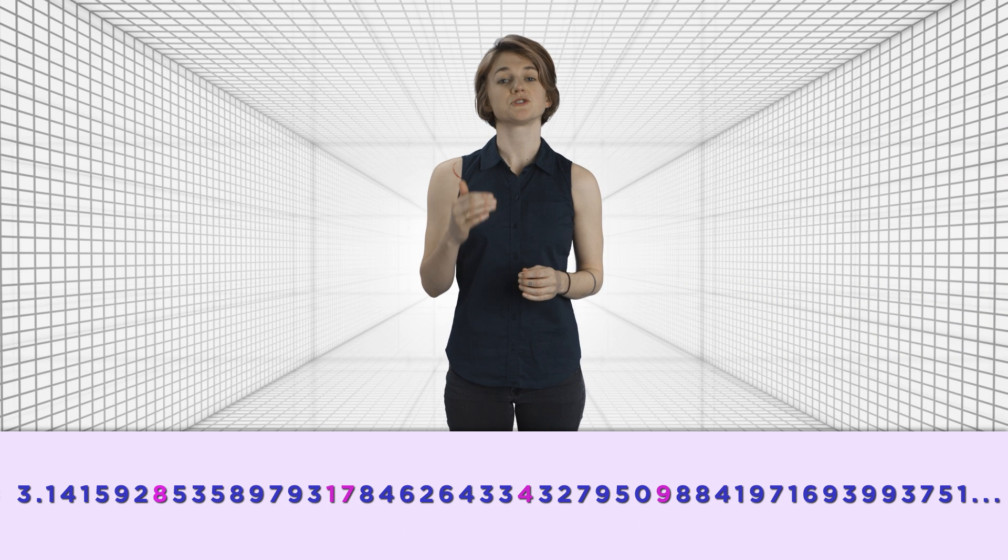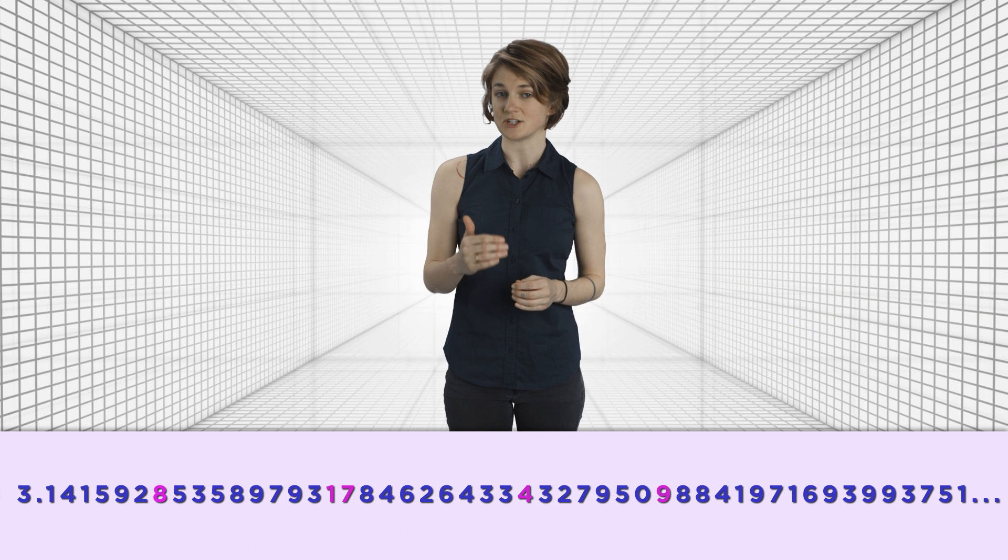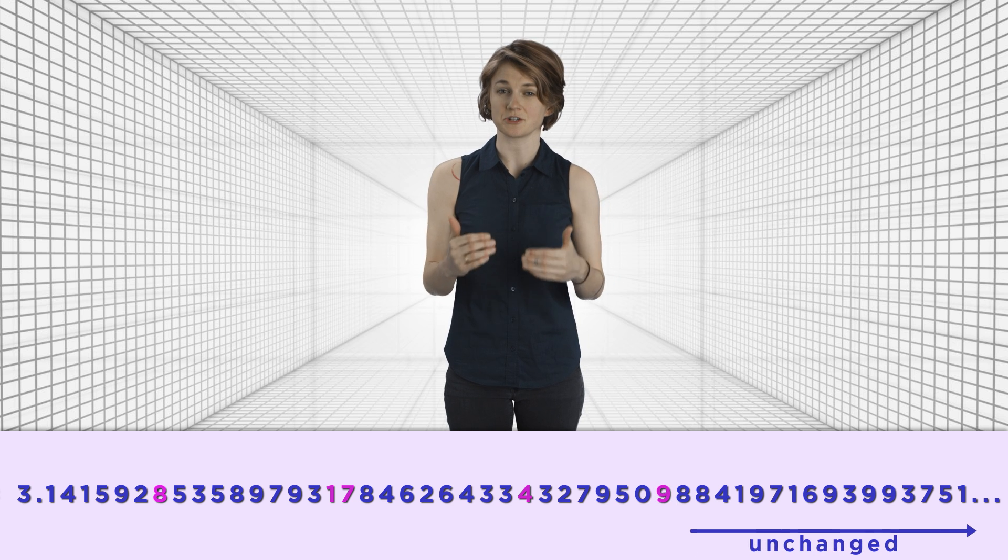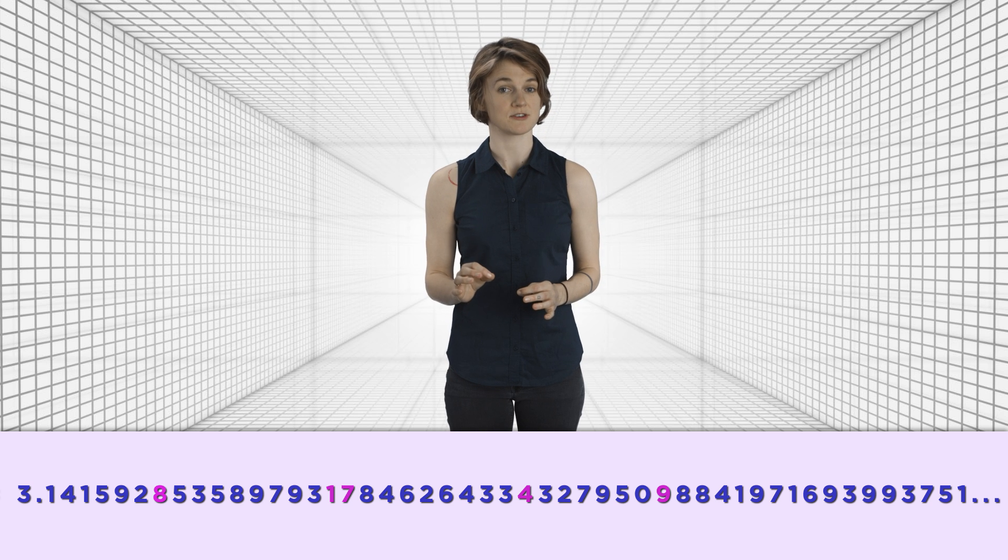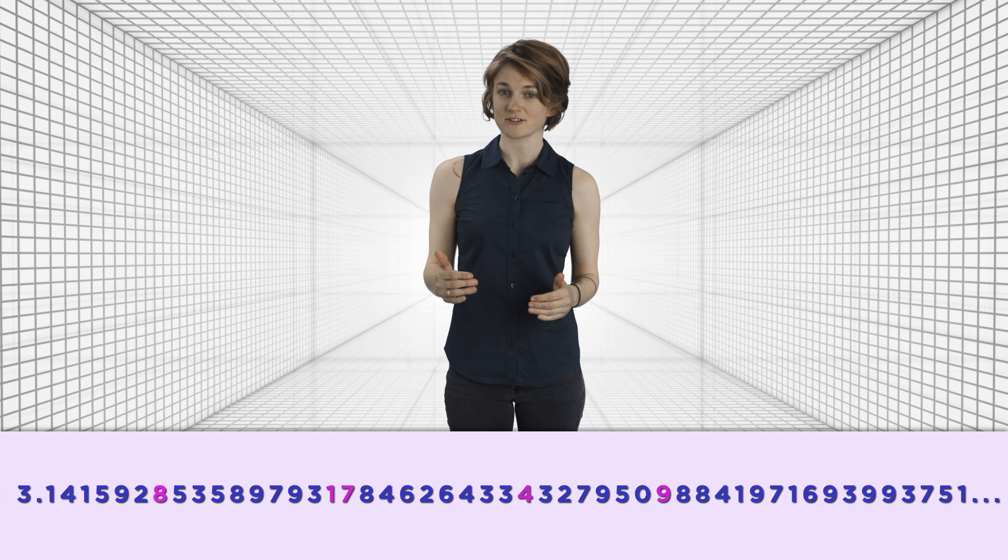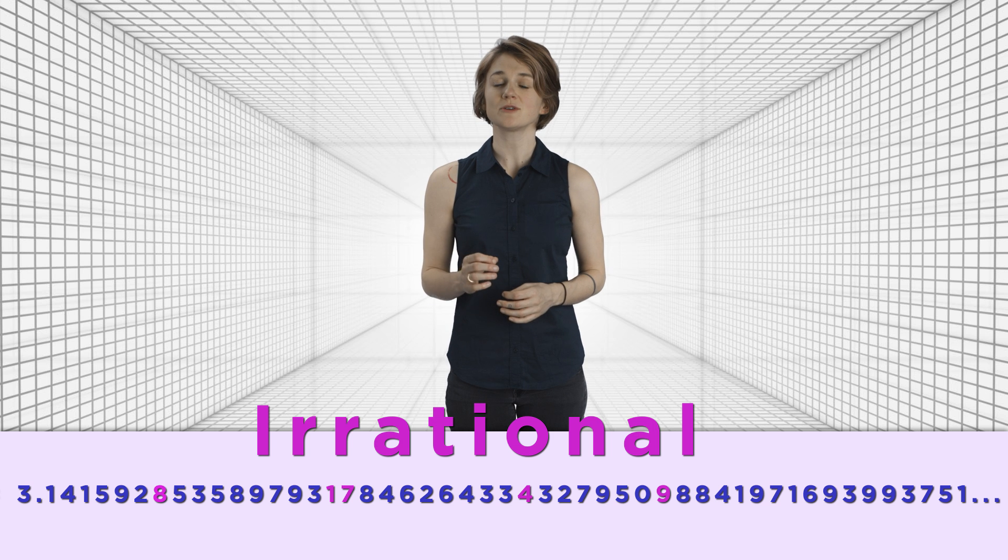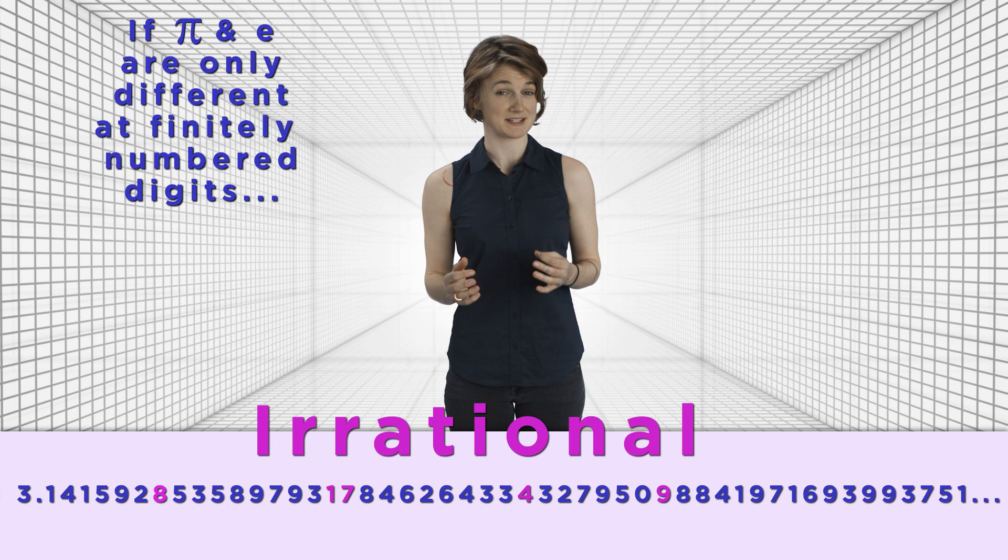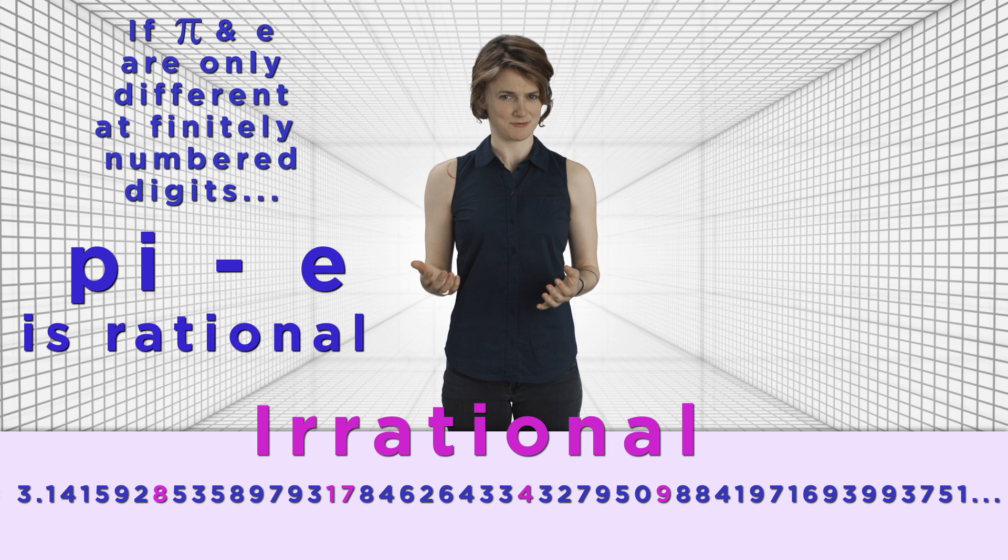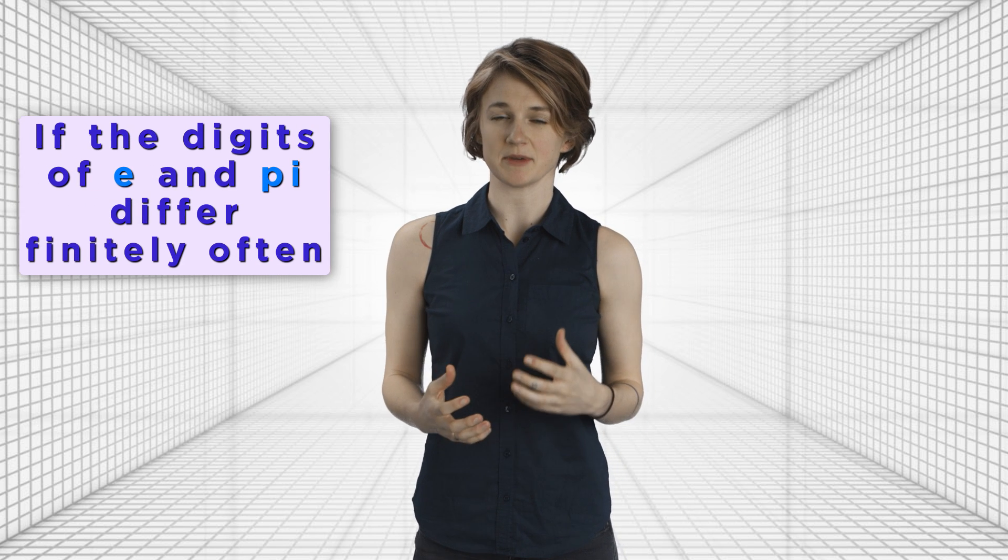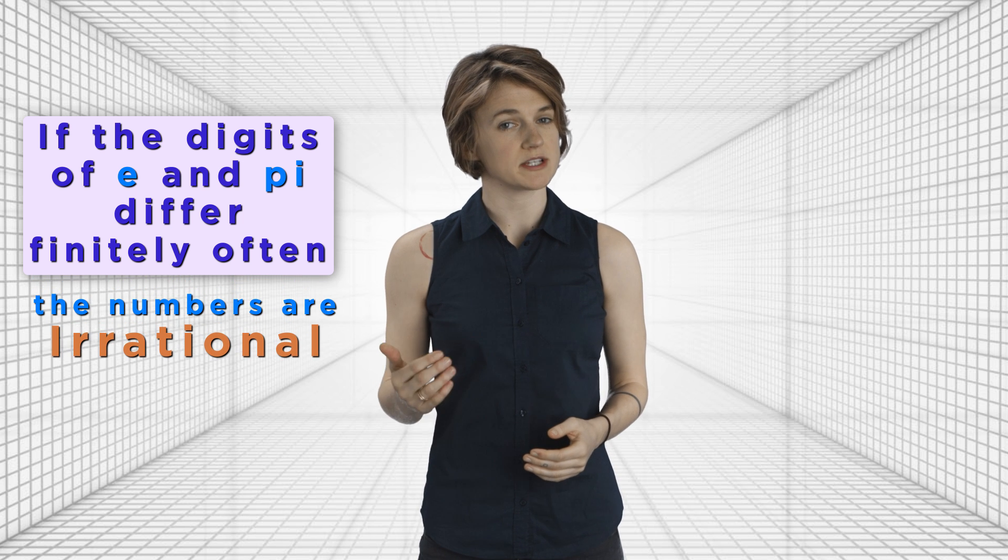Let's just look at pi. Assume we change finitely many digits of pi. Let's look at the last digit that we changed. Everything after it is unchanged. Since pi is irrational, these digits don't have a repeating pattern. So the modified version of pi also doesn't have a repeating pattern and is therefore irrational. Notice that if pi and e are only different at finitely many digits, then pi minus e is rational. So the answer is pretty easy if pi and e happen to only differ at finitely many digits. The numbers on the list are all irrational.